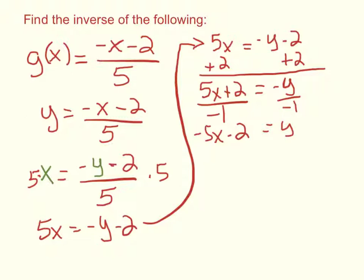So now we found the line that's the inverse of it. Now we just need to write it in function notation. And a lot of times we're used to seeing the variable that we solved for on the left-hand side. So I'm going to rewrite that first. y equals negative 5x minus 2.